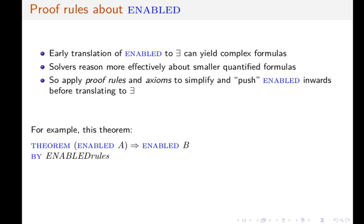And complex formulas can make it more difficult for the solvers to reason about them. This is why we want to first apply proof rules and axioms to push ENABLED towards the leaves of the syntax tree before translating it to existential quantification. For example, here's a theorem that contains ENABLED.